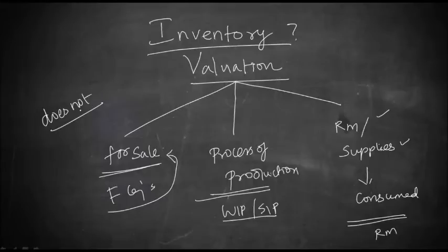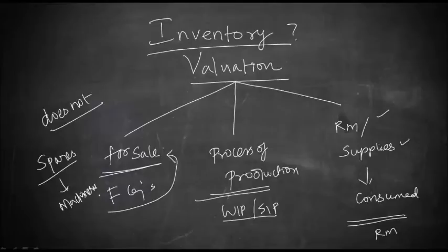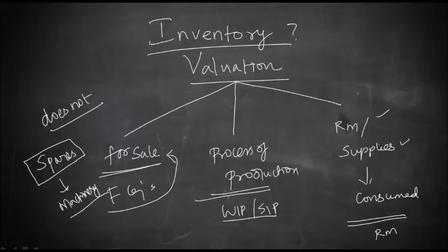However, we have to understand that inventory does not include certain items. For example, you may have certain spares related to machinery, but if you have no intention to consume those spares for service or selling, and they are to be used only in connection with a fixed asset and their use is not expected to be regular, then such spares would constitute part of plant and machinery, not inventory.